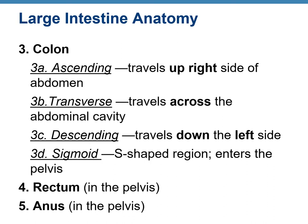The colon has four parts. The ascending colon travels up on the right side of the abdomen. The transverse colon travels horizontally across the abdominal cavity. The descending colon travels down to the left side. It then makes an S-shaped region called the sigmoid colon, which enters the pelvis, opens into the rectum, and the rectum opens into the anal canal, which opens to the outside through the anus.